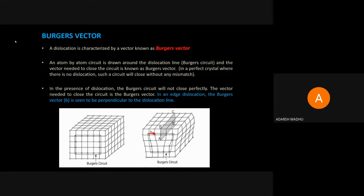It is known as the Burgers vector. The Burgers vector can only be closed — we close the circuit and the line of action is known as Burgers vector. The direction of the Burgers vector in edge dislocation is perpendicular to the edge dislocation line.